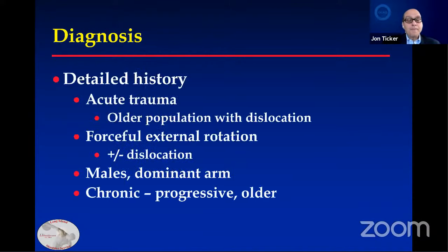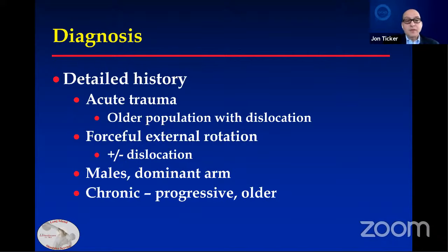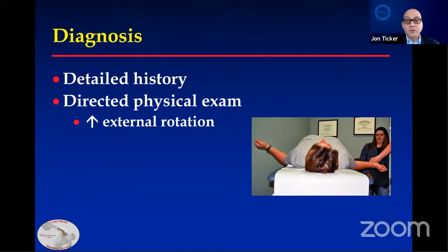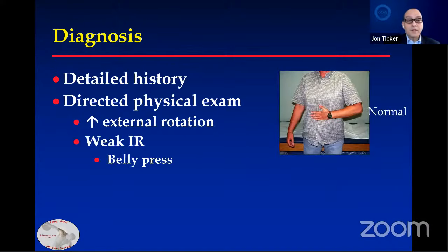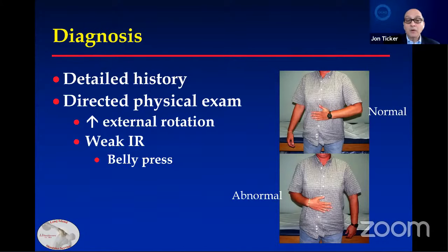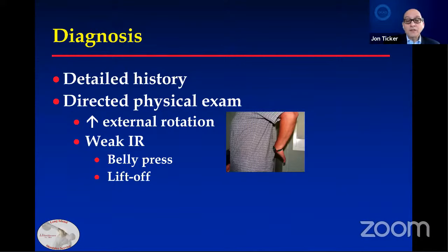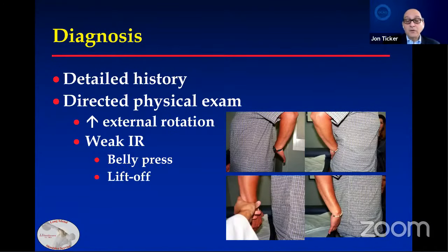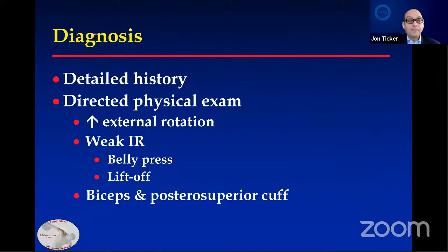In the clinic, a detailed history can often suggest subscapularis tear with trauma and forced external rotation — it's more common in males. A directed physical exam: in this patient there is increased external rotation in the right shoulder, weak internal rotation with the belly press — the left is normal, the right is abnormal, and the elbow cannot stay out to the side. There's also the lift-off: the normal hand is in the small of the back and they can lift it off, whereas this patient can't. There's a modified lift-off where if they don't have a competent subscapularis, it slaps against the middle of the back.